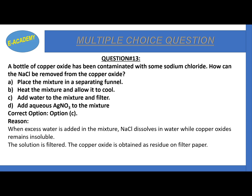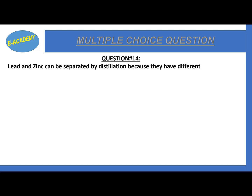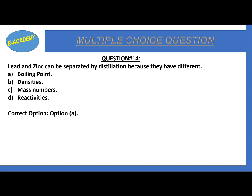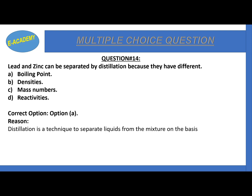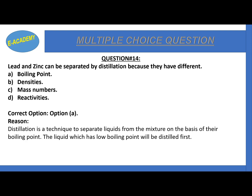Question number 14: Lead and zinc can be separated by distillation because they have different boiling points, densities, mass numbers, or reactivities? The correct option is A: different boiling points. Lead and zinc have different boiling points; distillation separates liquids based on boiling points, and zinc, having the lower boiling point, will be distilled first.